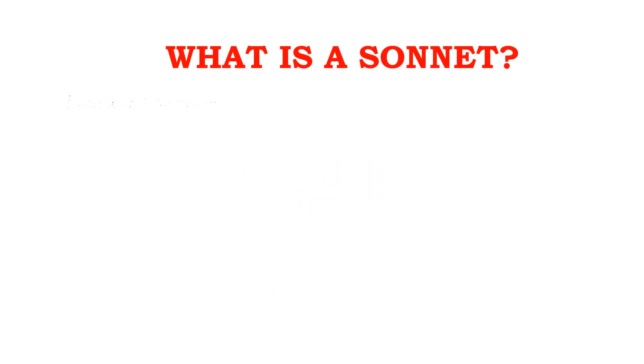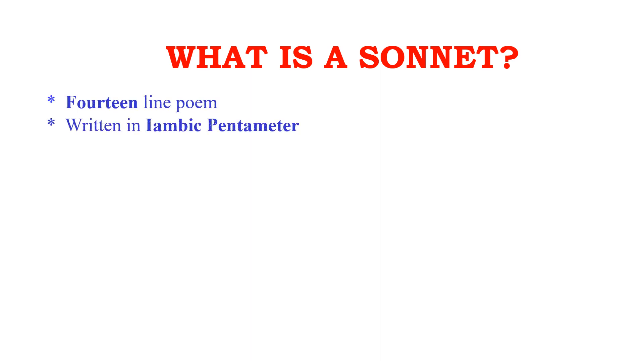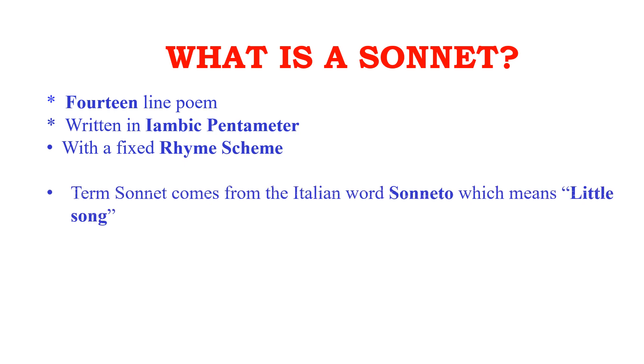This video is about sonnet — its definition, origin, the types of sonnets, its structure along with examples. A sonnet is a 14-line poem written in iambic pentameter with a fixed rhyme scheme. I'll give a brief idea of iambic pentameter after discussing a few more points on sonnet.